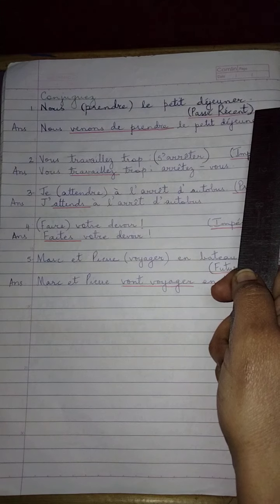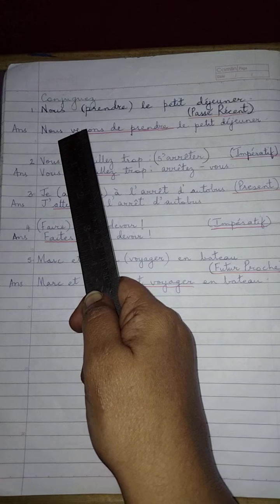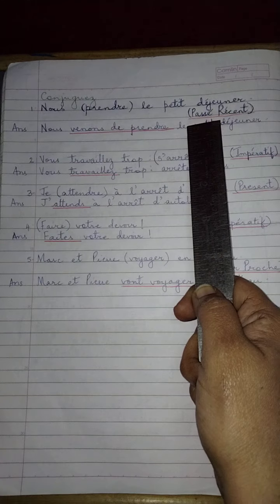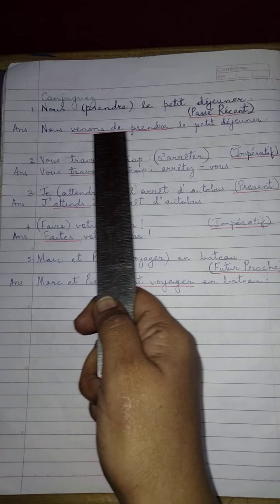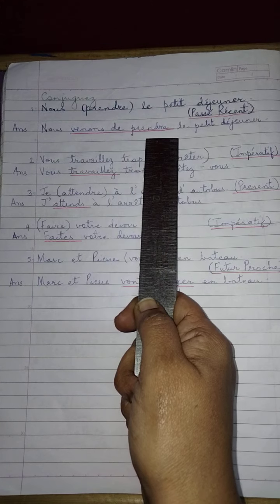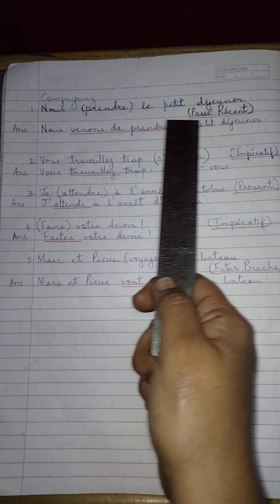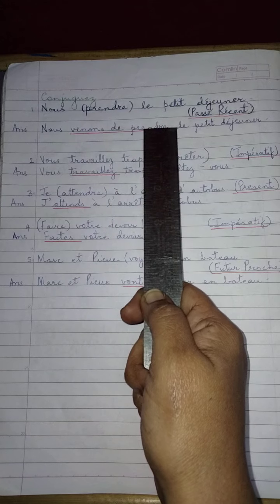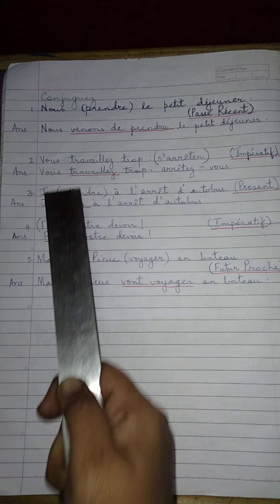Passé récent — the recent past. So, we have just had our breakfast. Nous venons de prendre. Passé récent takes 'venir' plus the 'de' form, plus the infinitive of the given verb. So, 'prendre' will come as it is.